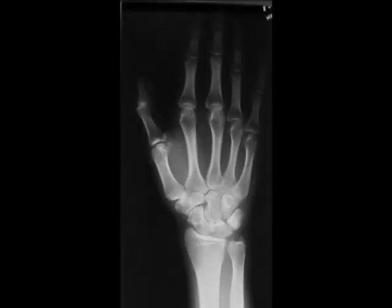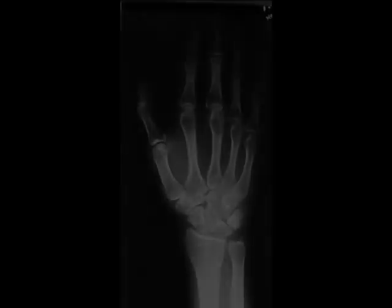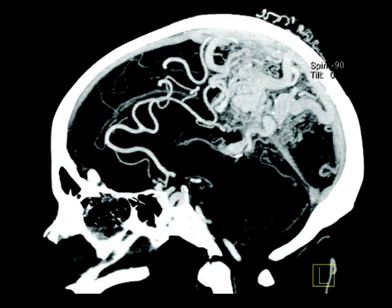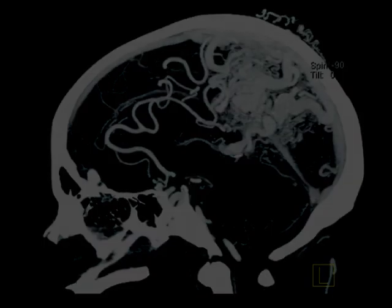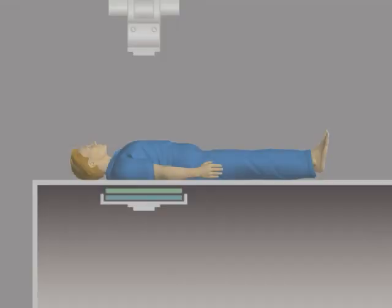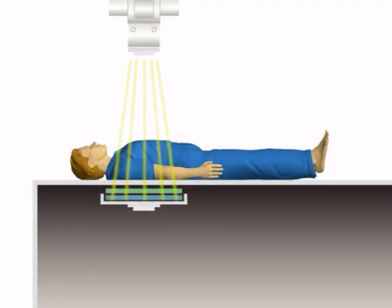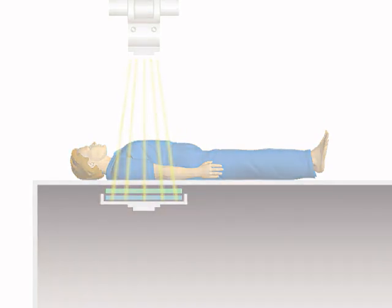X-ray devices are generally used to take projection images of hard tissues like bones. CT scans take images of both hard bony tissues and soft tissue, such as the brain. Both x-ray and CT systems use x-ray beams, which travel through the body and project an image onto a photographic film or displayed on a video monitor. MRI, on the other hand, works differently.